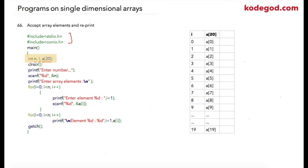I'm declaring the array variable of integer type with size 20, and I'm asking the user to enter 'n', which will be the number of elements. Suppose the user has entered 5, then 5 will be stored into the address location of 'n'. Then I'm asking the user to enter the array elements.